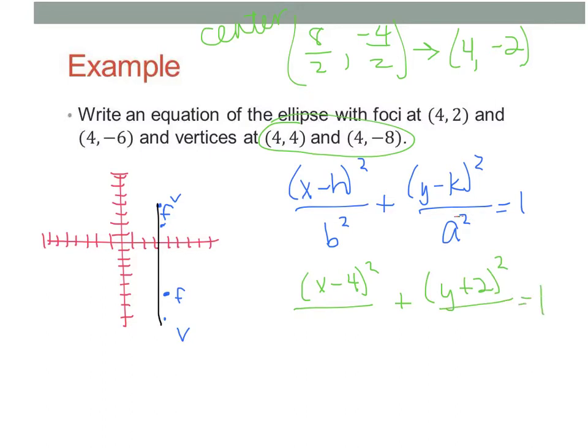So, my equation is going to have to be x minus 4 squared plus y plus 2 squared. So we got that much. So, my center, 4, negative 2. So to get my a value, all I have to do is count one of these. So, to go from negative 2 to 4, that'd be 6, or to go from negative 2 to negative 8, that'd be 6. So, a has to be 6, so a squared, 36.